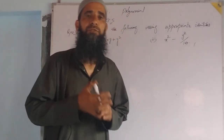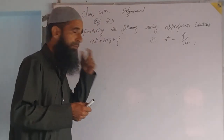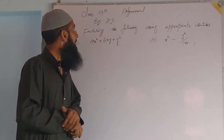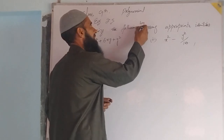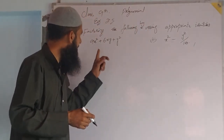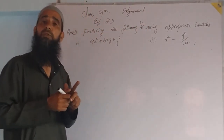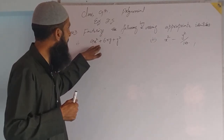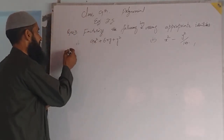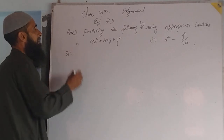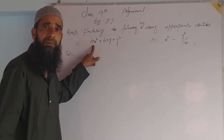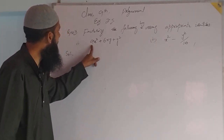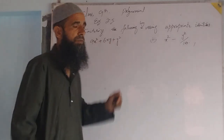Dear students, in class today we will discuss one of the questions of Exercise 2.5 from the chapter on polynomials. The question is: factorize the following using appropriate identities — we are factorizing algebraic expressions using appropriate identities. This is a simple question.